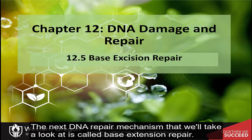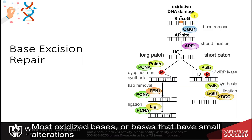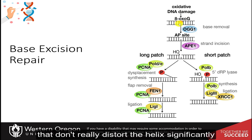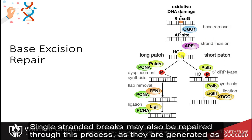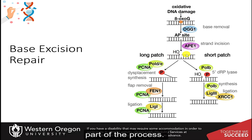The next DNA repair mechanism we'll look at is called base excision repair. Most oxidized bases, or bases with small alterations that don't significantly distort the helix, are removed from DNA by enzymes operating within the base excision repair, or BER, pathway. Single-stranded breaks may also be repaired through this process, as they are generated as part of the process.